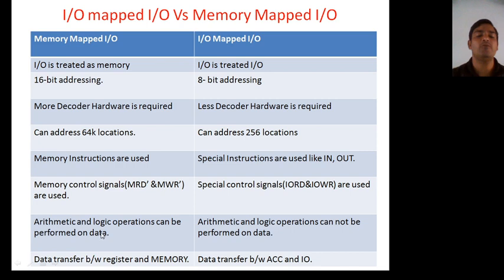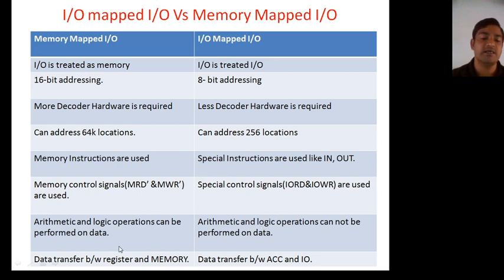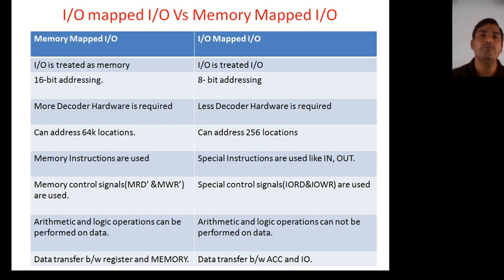Arithmetic and logical operations can be performed on data by using memory mapped input-output — for example, ADM and ANAM. But with I/O mapped input-output, you cannot perform arithmetic and logical operations; only the two instructions IN or OUT are available for data transfer. Data transfer in memory mapped I/O is between any register and memory, such as MOV B, M or MOV M, D. But in I/O mapped I/O, data transfer is only between the accumulator and the input-output port — for example, IN 45 or OUT 45.